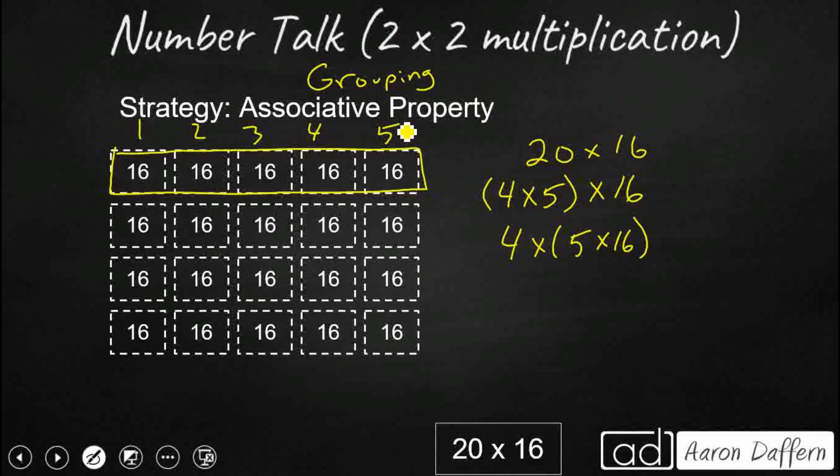So this 5 groups of 16, that's going to give me 80. And so all I need to do is I've got my 4 groups of 80. I'm going to skip count. 160, 240, and 320.